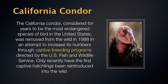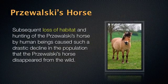Example number two: Przewalski's horse. This species' numbers declined rapidly. Subsequent loss of habitat and hunting by human beings caused such a drastic decline in population that Przewalski's horse disappeared from the wild.